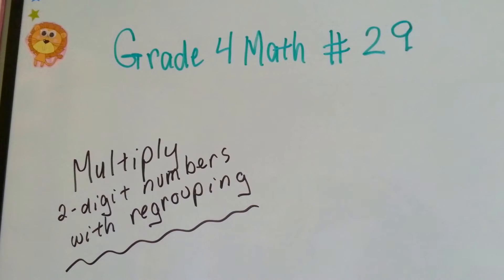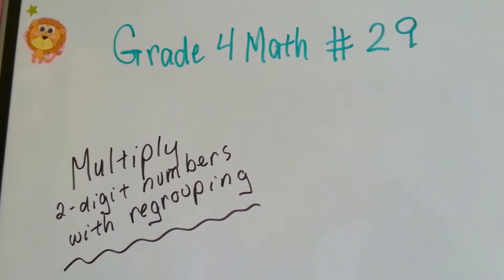Grade 4 math number 29, multiply two-digit numbers with regrouping.